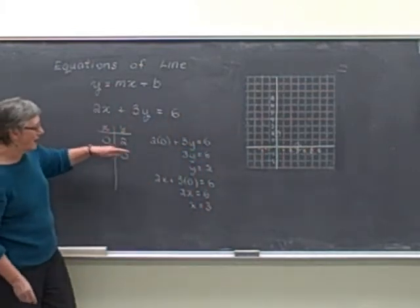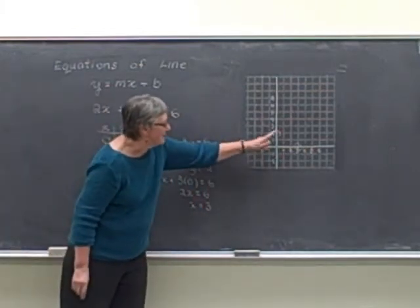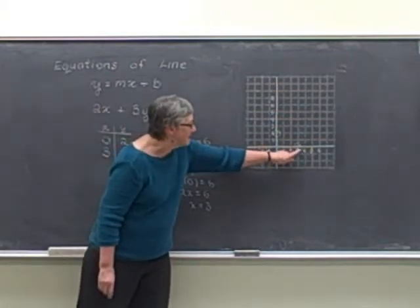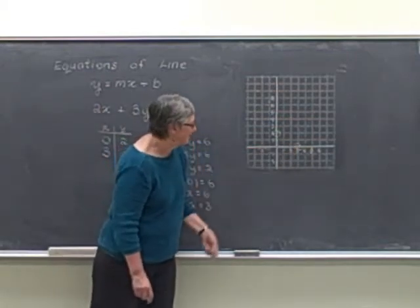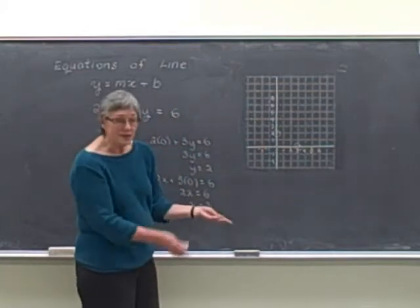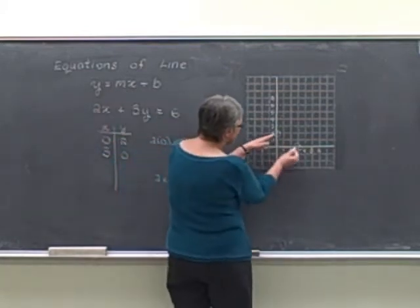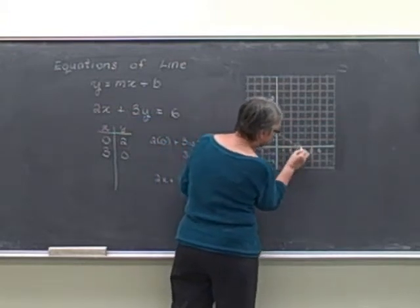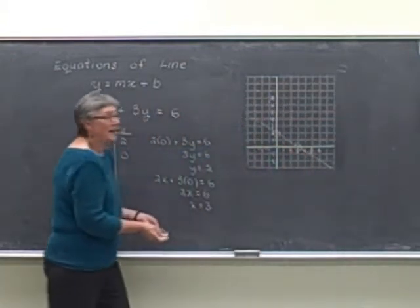The first point again is the y-intercept because that's where the line crosses the y-axis. The second point is where the line crosses the x-axis, and we call that the x-intercept. And we can draw the line just using those two points and trying to follow the pattern. And I've got the line.